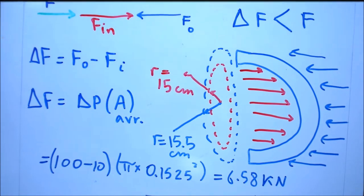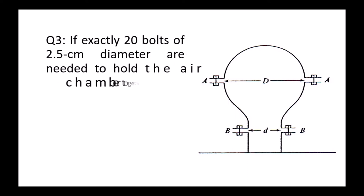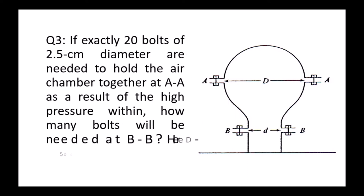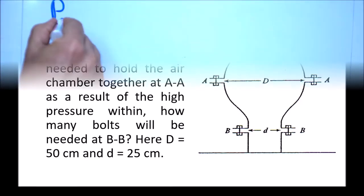Third question: we have a spherical container with an opening in the bottom and two flanges. Cross-section A has capital diameter D, and cross-section B has small diameter d. In the upper flange, we fixed the two parts with 20 bolts. The question is how many bolts are needed for flange B. The key to the solution is that the pressure inside the container is constant - this is accurate for gases or high-pressure liquid where height is neglected. So we do the balance: pressure A equals pressure B.